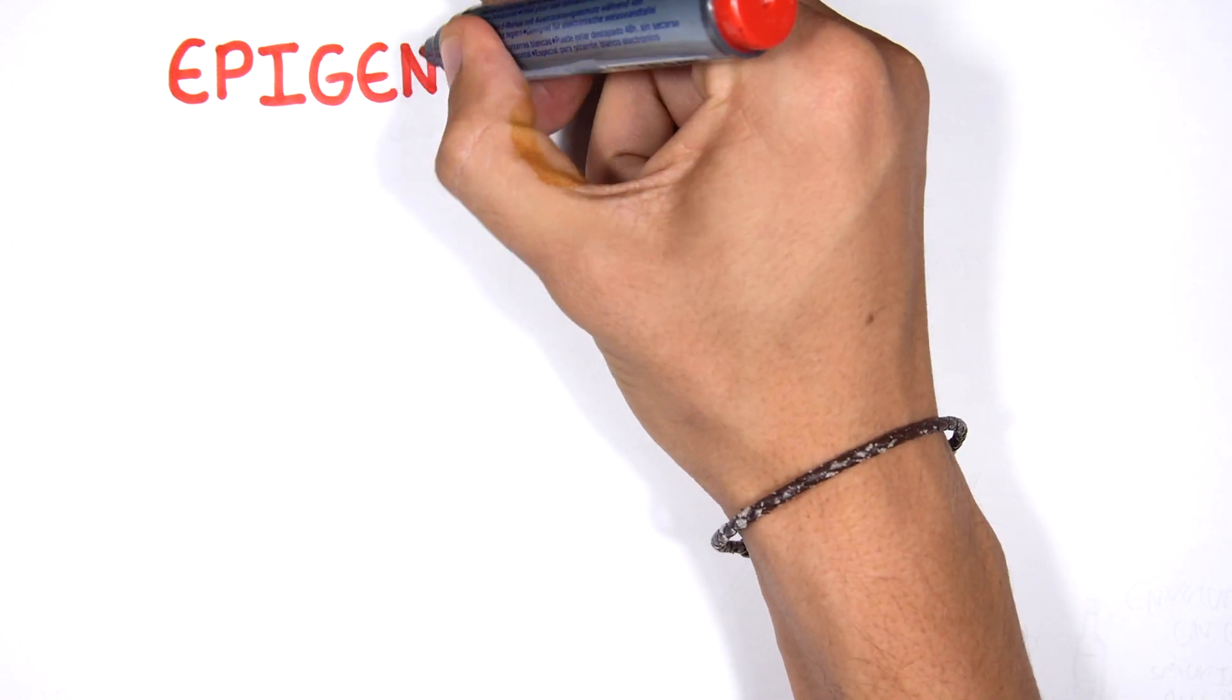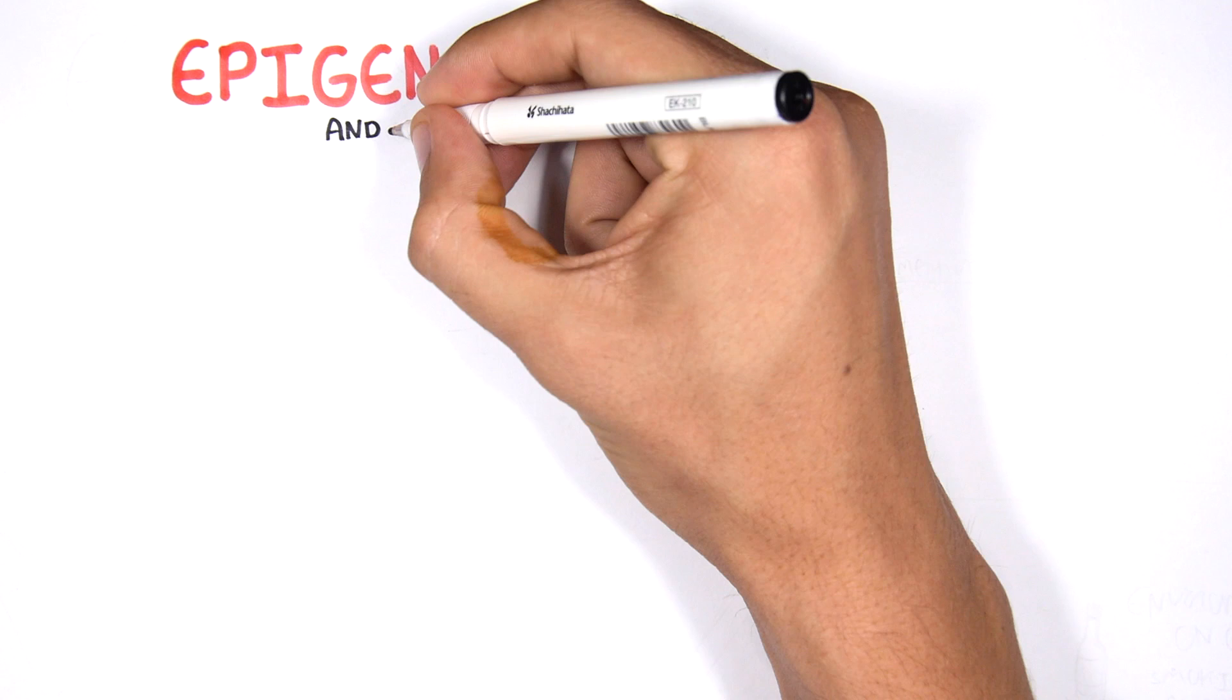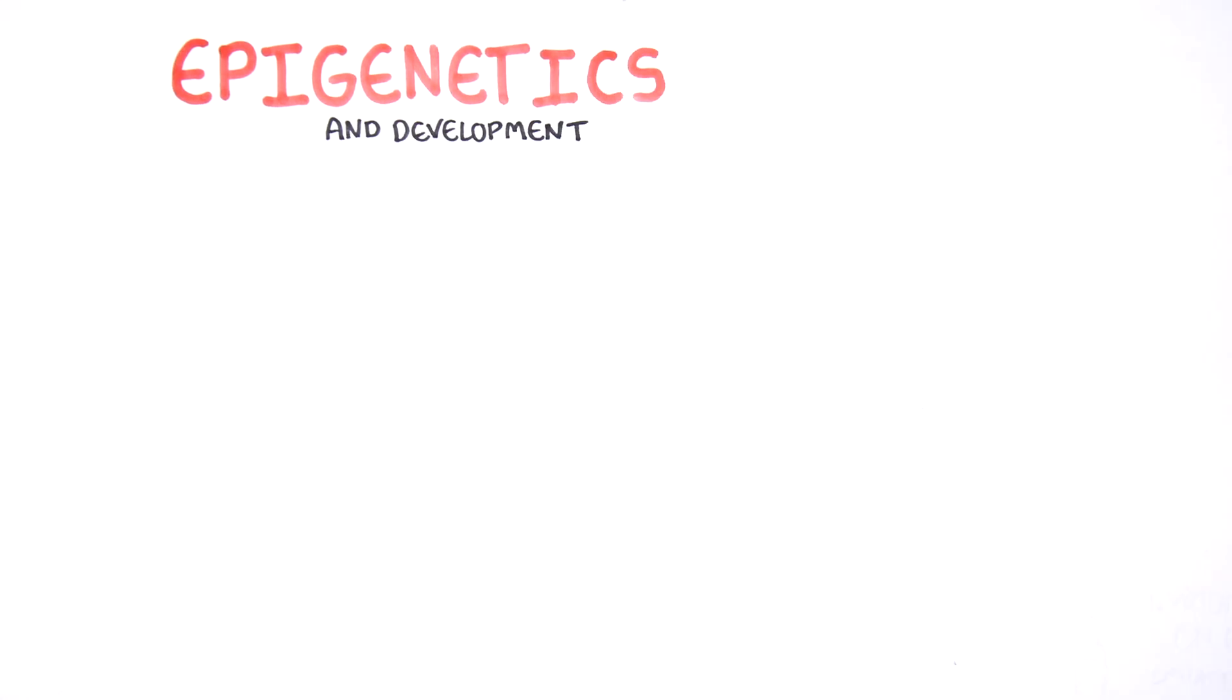Epigenetic modification of the epigenome is established during early embryonic development and is maintained during cell division. In this video we will look at DNA methylation during embryonic development and the influence the environment can have on DNA methylation patterns.